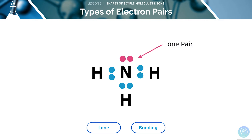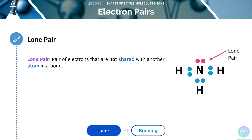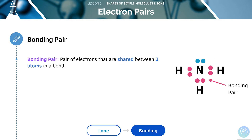We have highlighted the lone pairs of electrons in nitrogen, shown in pink. Similarly, we can now see the three bonding pairs of electrons of nitrogen, shown in pink again. The lone pair is defined as the pair of electrons that is not shared with another atom in a bond. The bonding pair is the pair of electrons that is shared between two atoms in a bond.